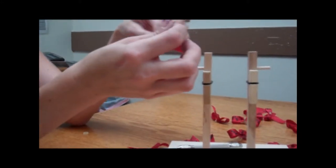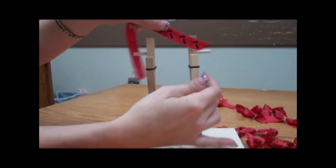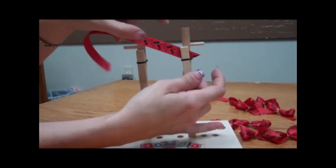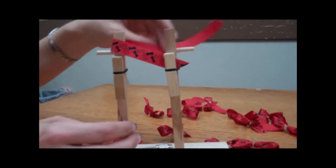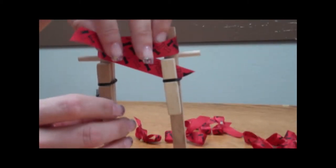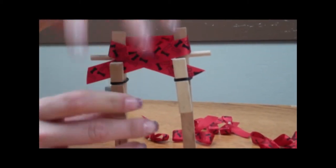Cut your length of ribbon. Usually start on the front, hook it to the clothespin, wrap it around, and hook it into the other clothespin.